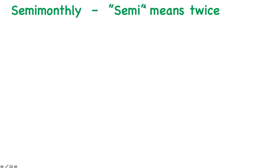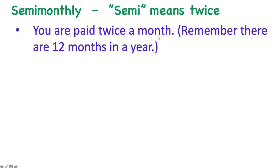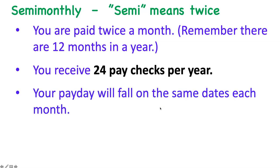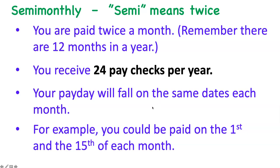Now let's go to a semi-monthly pay period. There's a lot of confusion with the word 'semi.' For finance, the way I remember it is that semi means twice — you are paid twice a month. You might be thinking semi means half, and it does in geometry — a semi-circle is half a circle — but for your finance class, with time, semi means twice. So semi-monthly means you're paid twice a month. Since there are 12 months in a year, you have 24 paychecks per year. Remember: bi-weekly is 26 paychecks per year, but semi-monthly is 24. If you're paid semi-monthly, your payday falls on the same dates each month — for example, the 1st and the 15th.